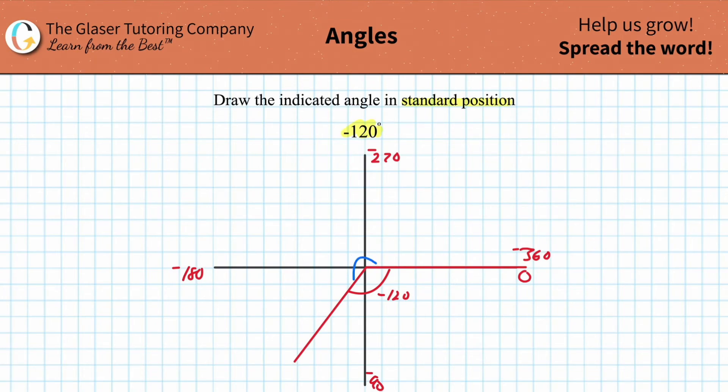You can always find that opposite side, meaning the positive angle, by simply taking 360 and subtracting out 120 from it. And that should have been 240 degrees, positive.